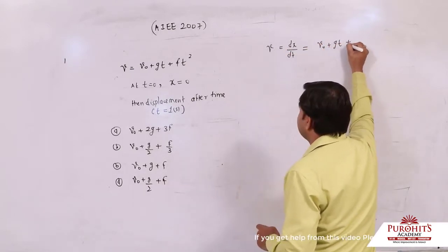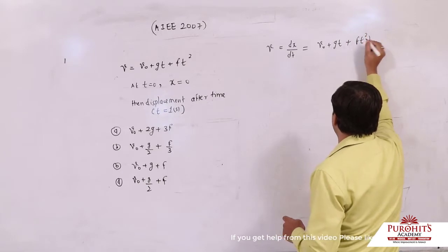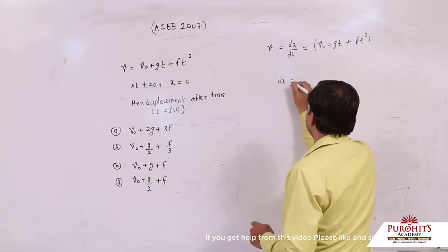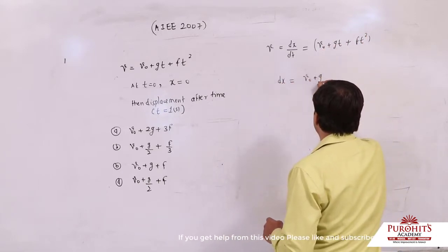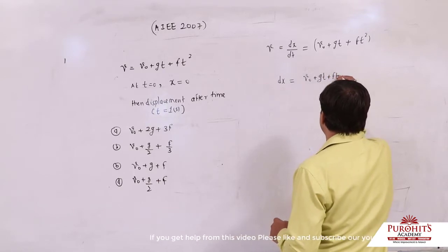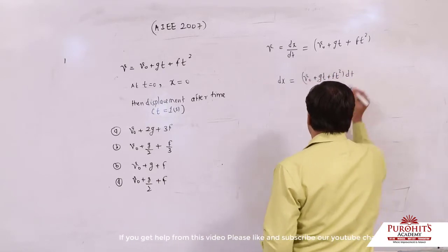The velocity is v0 plus gt plus ft square. So dx can be written as v0 plus gt plus ft square, and dt.